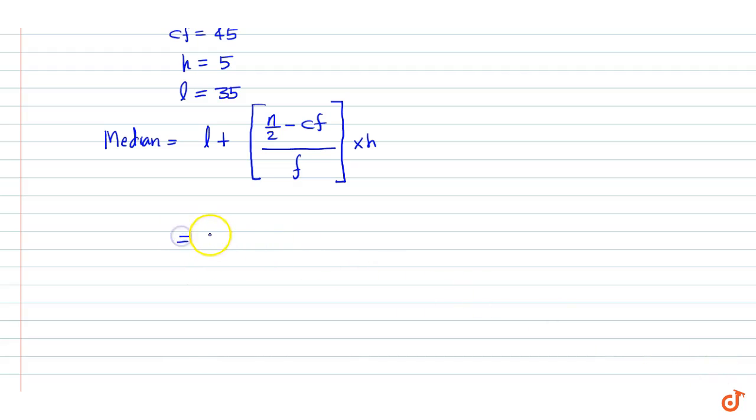This equals 35 plus, n by 2 is 50, 50 minus 45 divided by 33 into 5. This equals 35 plus 25 by 33, which equals 35.76.